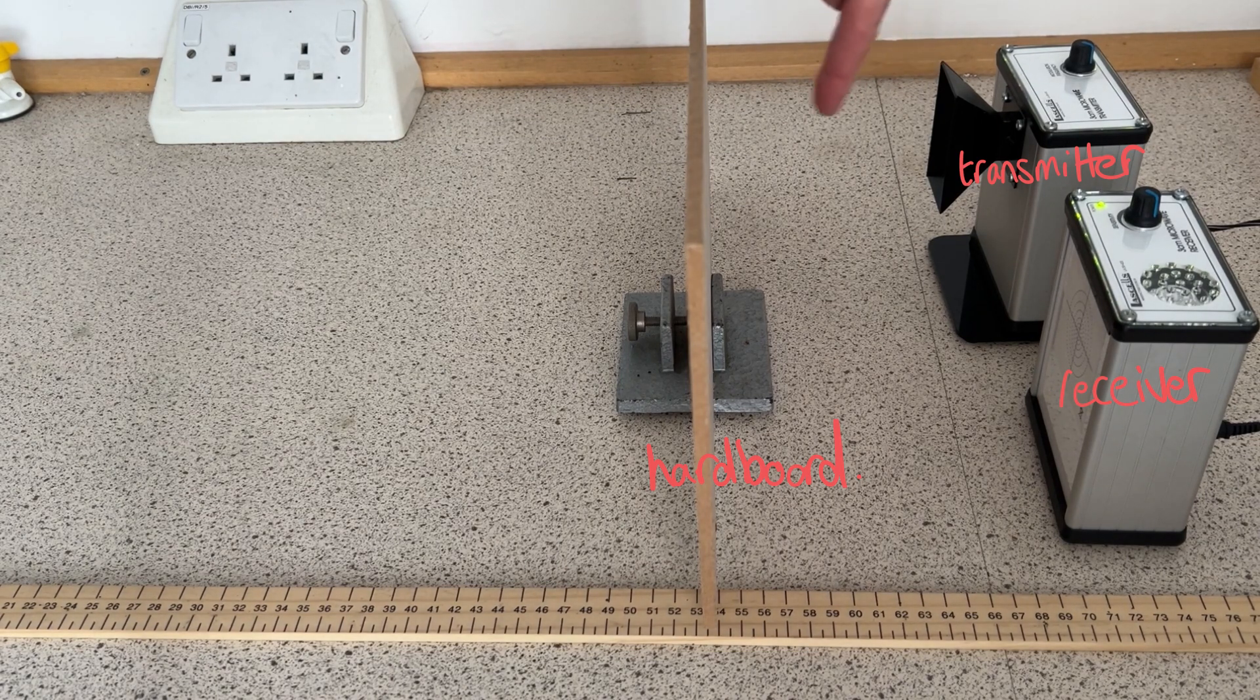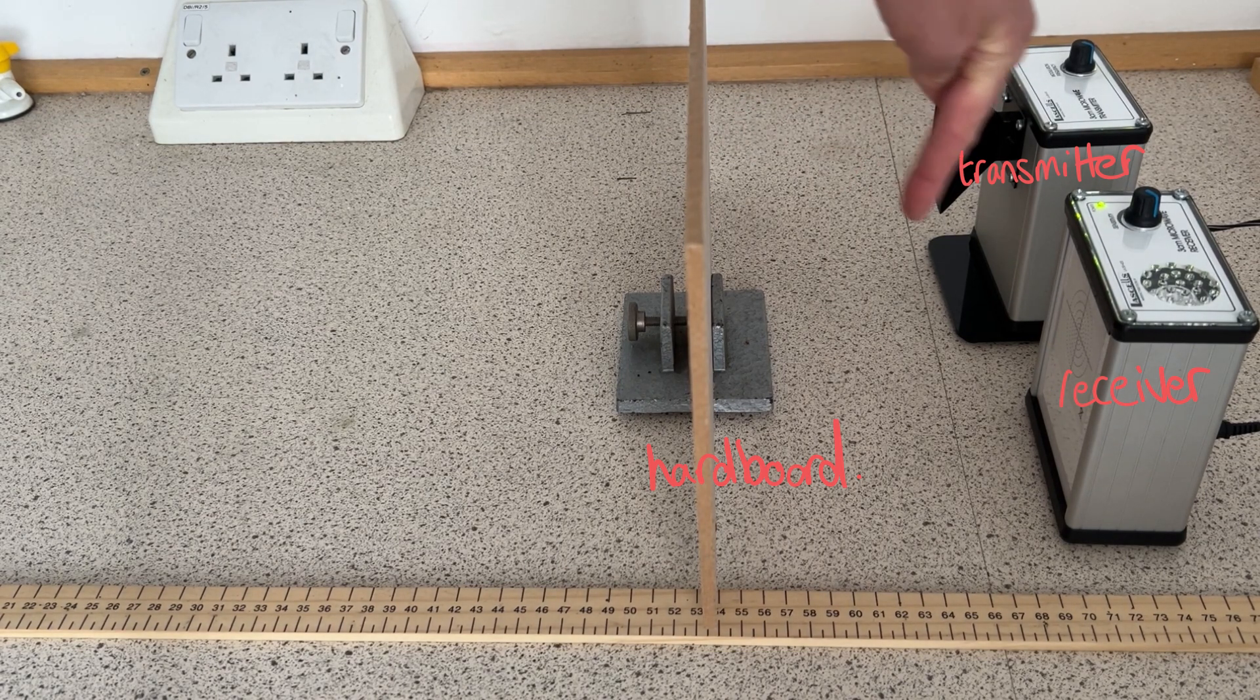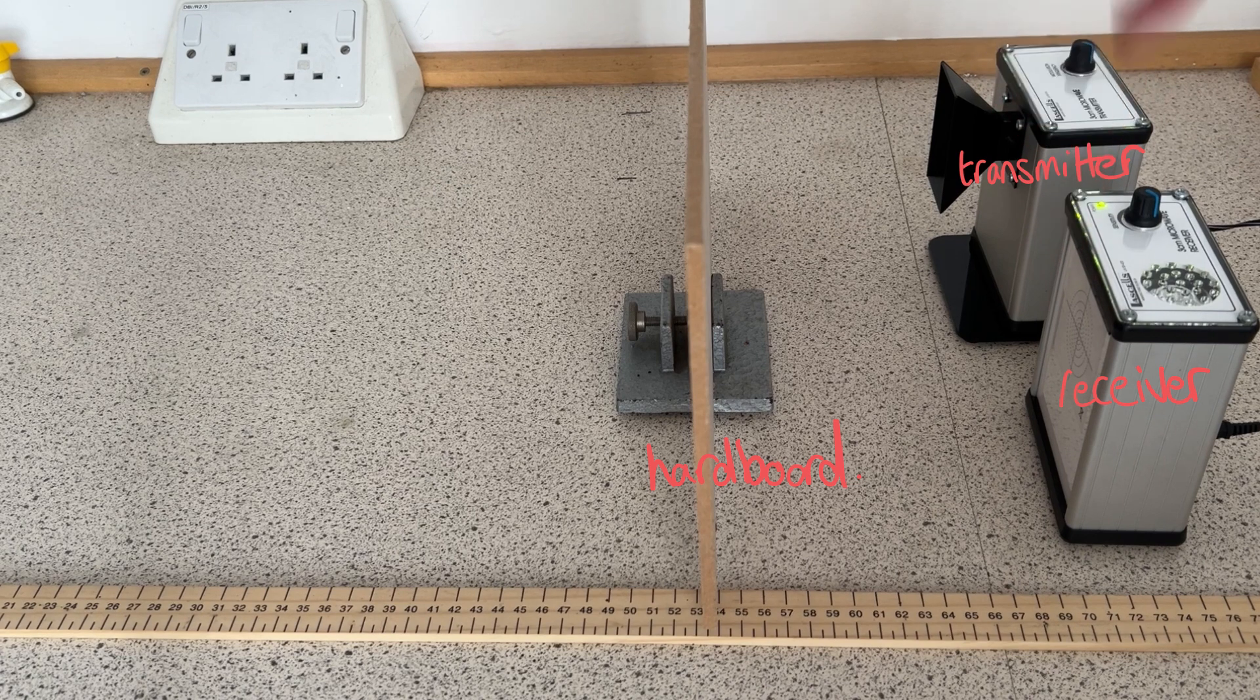In this physics demonstration, microwaves from a transmitter are partially reflected by the hardboard, which goes to the receiver.